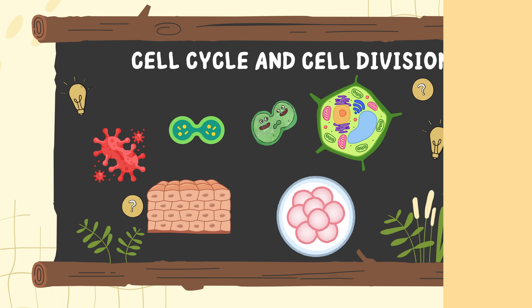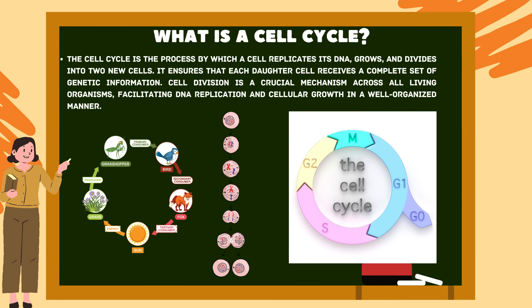Starting with introduction — what is a cell cycle? The cell cycle is the process by which a cell replicates its DNA, grows and divides into two new cells. It ensures that each daughter cell receives a complete set of genetic information. Cell division is a crucial mechanism across all living organisms, facilitating DNA replication and cellular growth in a well-organized manner.